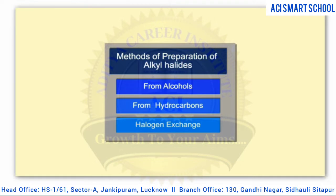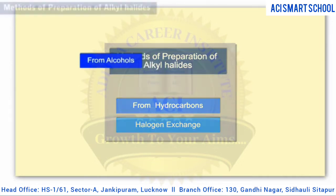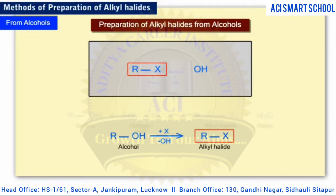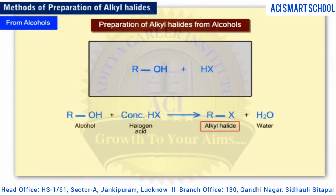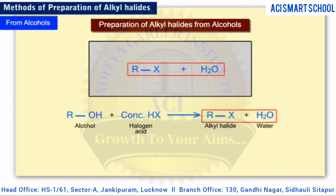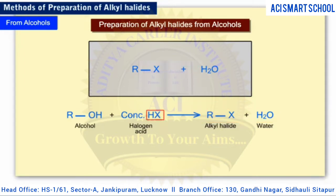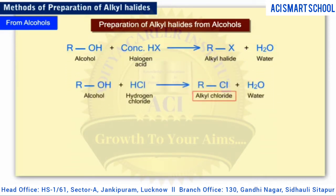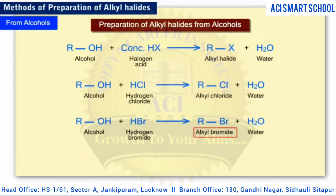Perhaps the best way to prepare alkyl halides is from alcohols, as alcohols are readily available. Essentially, turning an alcohol into an alkyl halide requires the substitution of a hydroxyl group by a halogen atom. One way to make alkyl halides from alcohols is through the reaction of alcohols with concentrated halogen acids, which have the general formula HX. Water is the other product of the reaction. In practice, this reaction is used primarily to prepare alkyl chlorides and alkyl bromides.